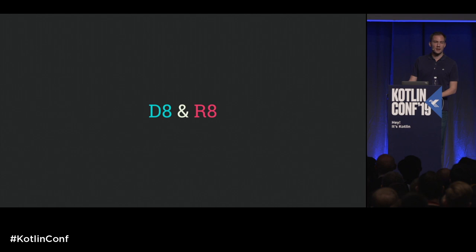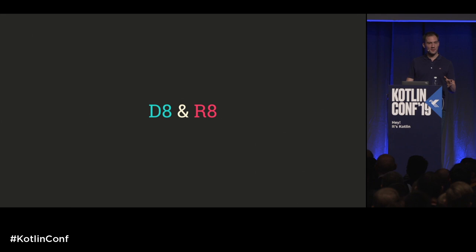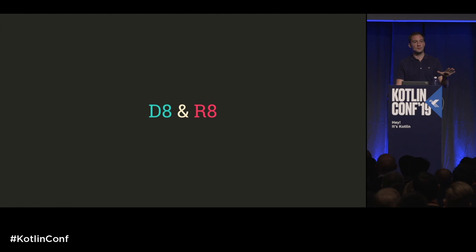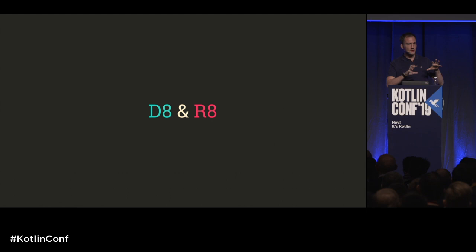Next, I want to talk about D8 and R8. D8 and R8 are two compilers for Android. With Android, when we use Java or Kotlin, we first compile to JVM bytecode, but the runtime on Android called ART does not consume this bytecode — it consumes something called Dex. D8 is a tool that takes JVM bytecode and converts it to Android bytecode called Dex. R8 can be seen as a replacement for ProGuard — often seen as a minifier or shrinker, it makes your app smaller. But it's also a fantastic optimizer because R8 can look at your entire app, the entire jar or dex file, and implement optimizations that would not be possible otherwise.